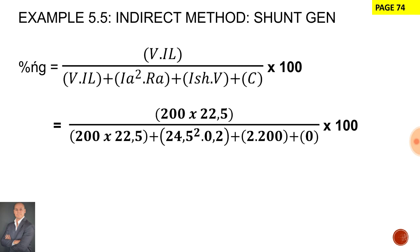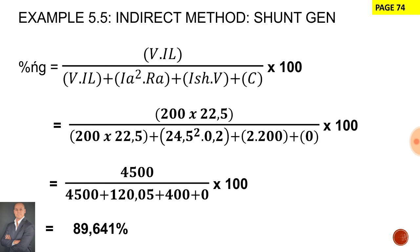Important to note that our mechanical losses in this example is zero as we are not given any values for mechanical loss. Now if we simplify those values, power over power plus the losses, we end up with an efficiency of 89.641%.